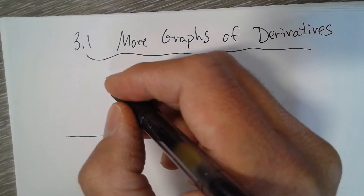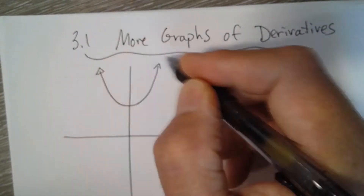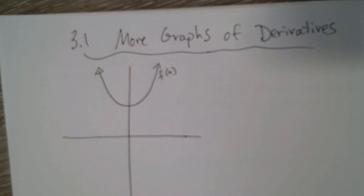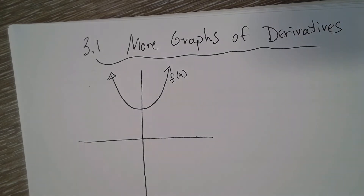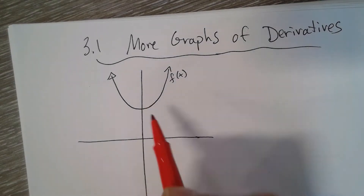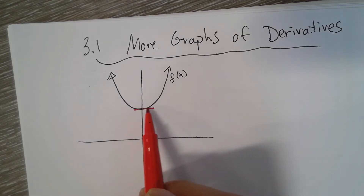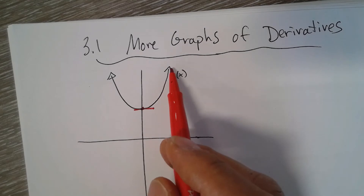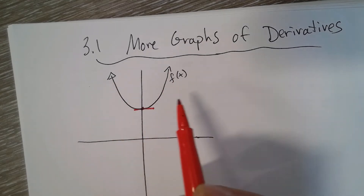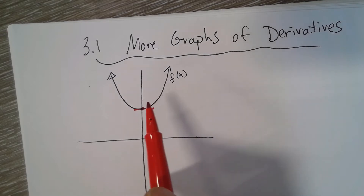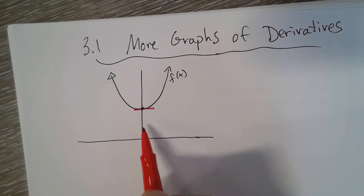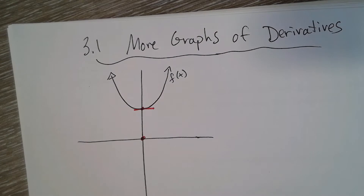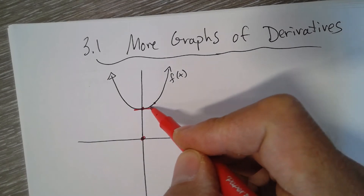So that is f of x. If I wanted to find the derivative of that — I actually centered it on the y-axis so that might be misleading — right here at 0 is where f of x has a slope of 0. So if I was going to graph f prime, I would start by making the derivative 0 at x equals 0. That point is on the derivative graph f prime of x.